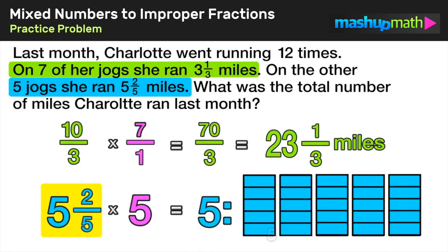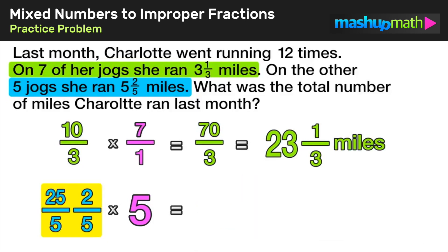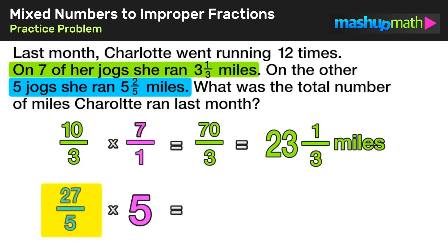Counting all those fifths: five, ten, fifteen, twenty, twenty-five fifths in total. So another way to express five as an equivalent fraction is twenty-five over five — twenty-five divided by five does equal five. Since we have common denominators, we add the two fractions together and we're left with twenty-seven over five.